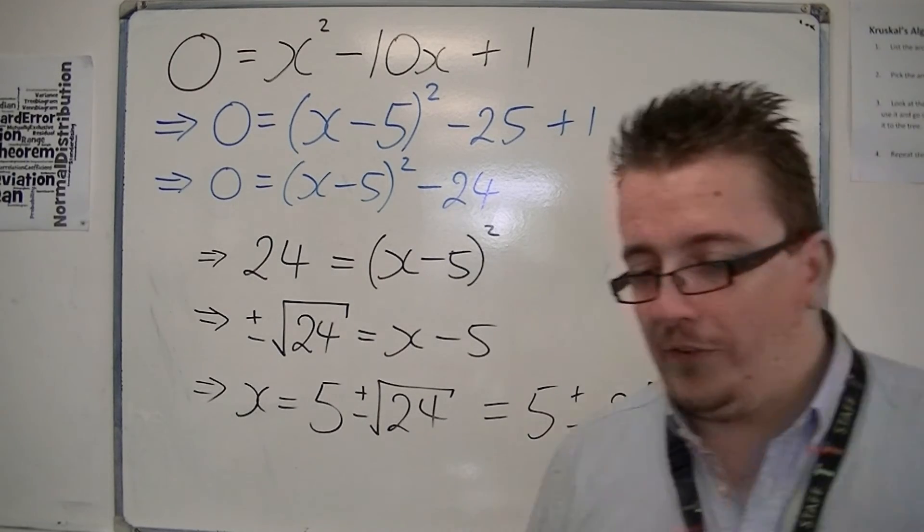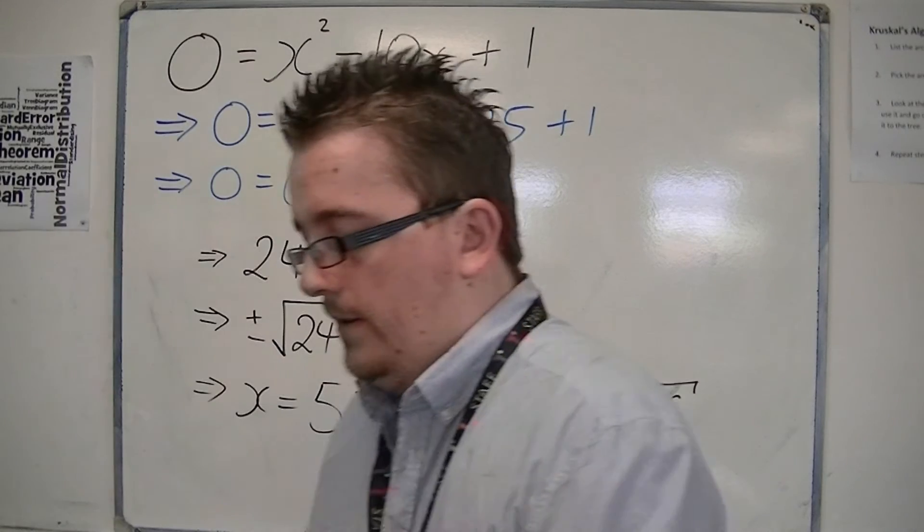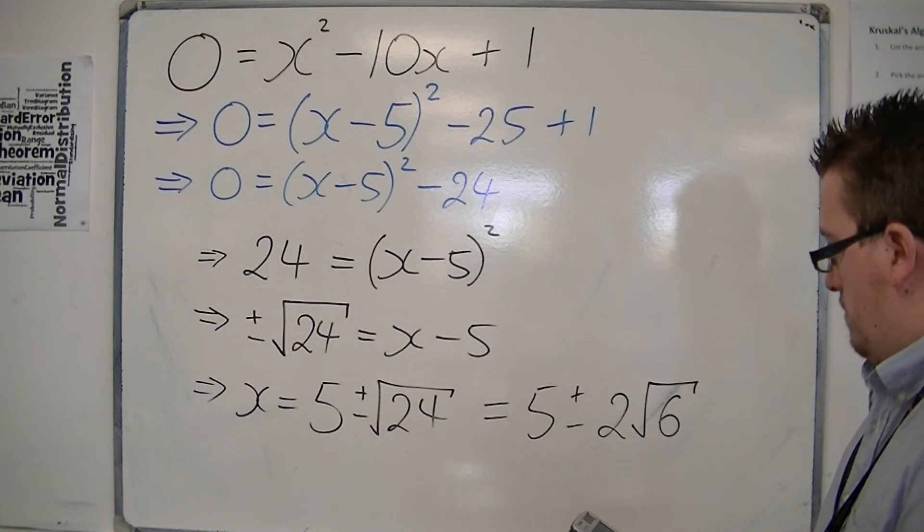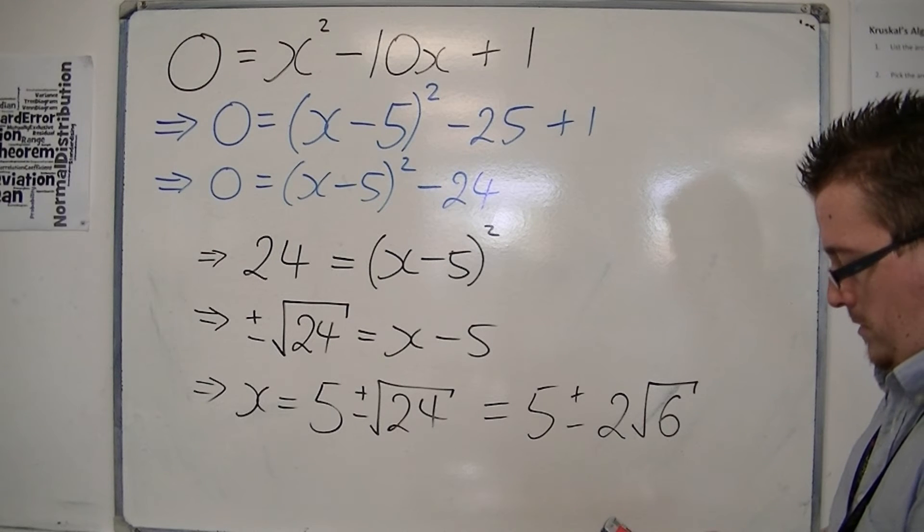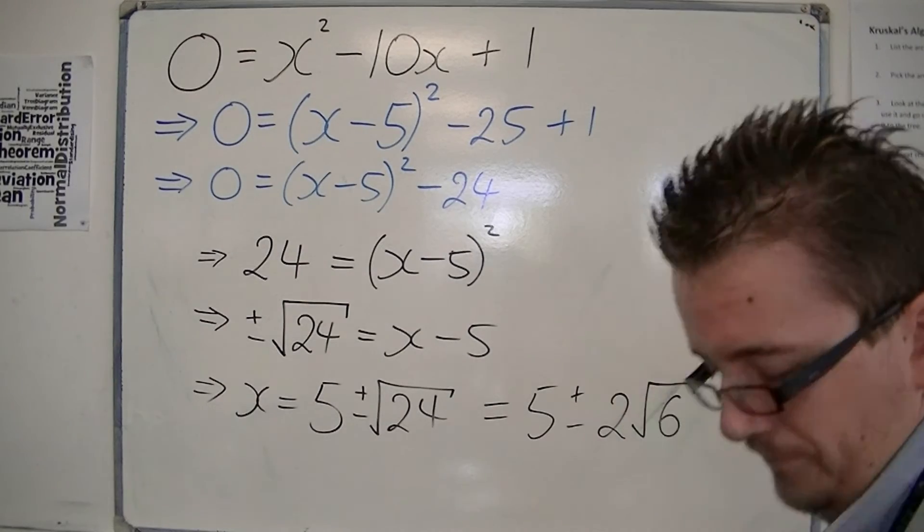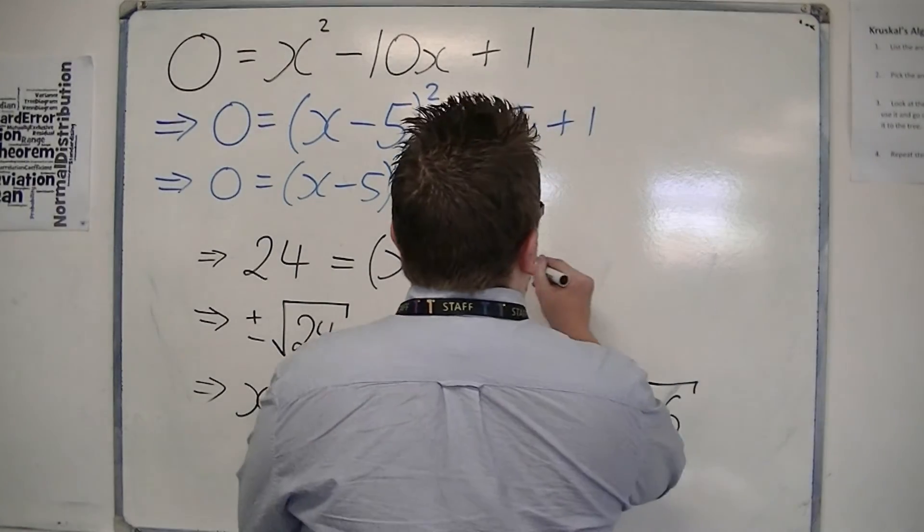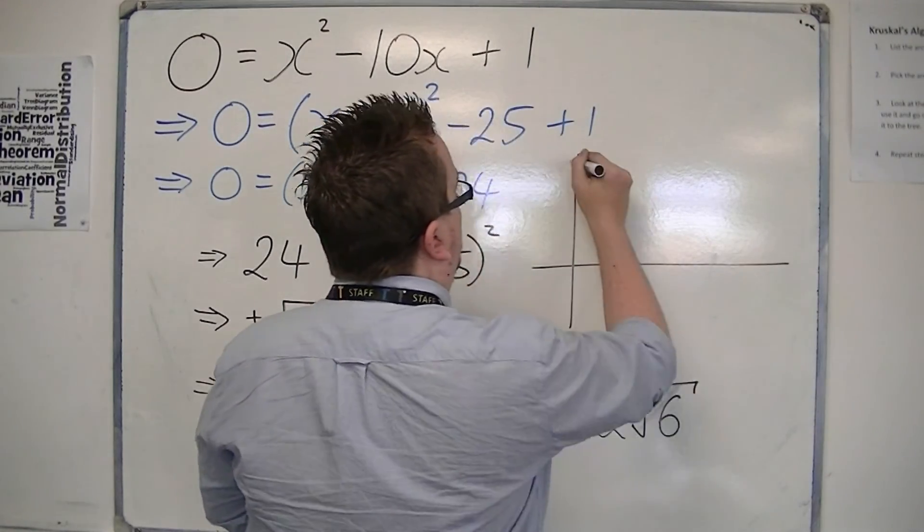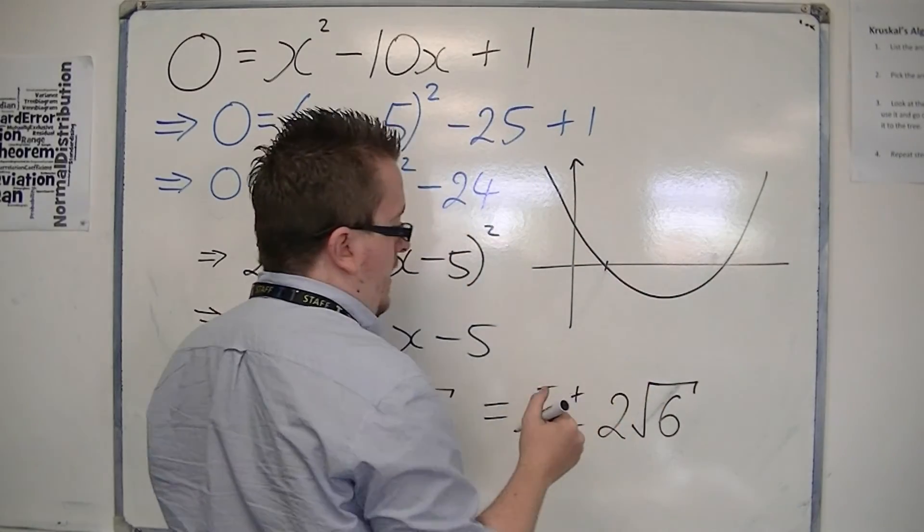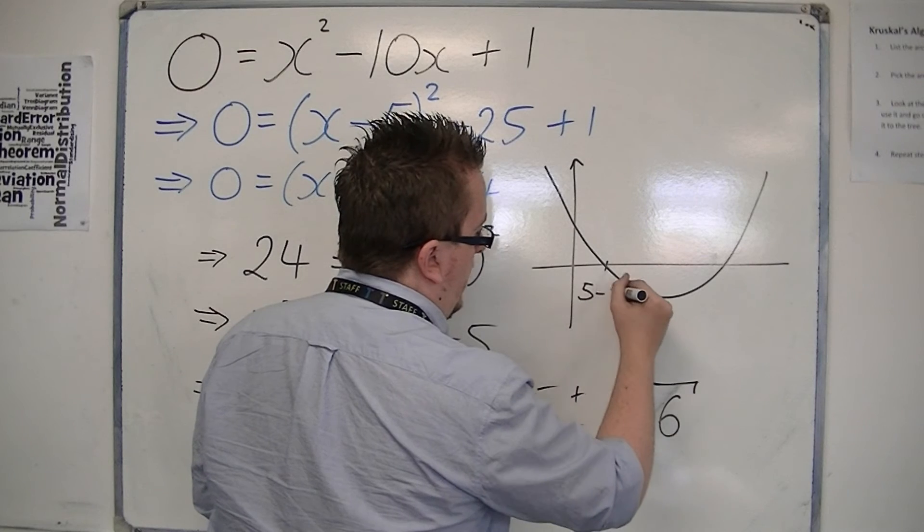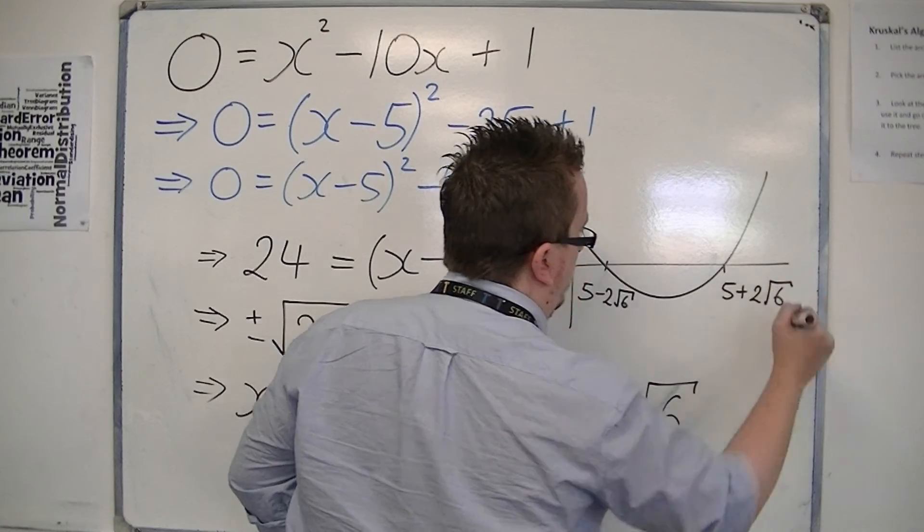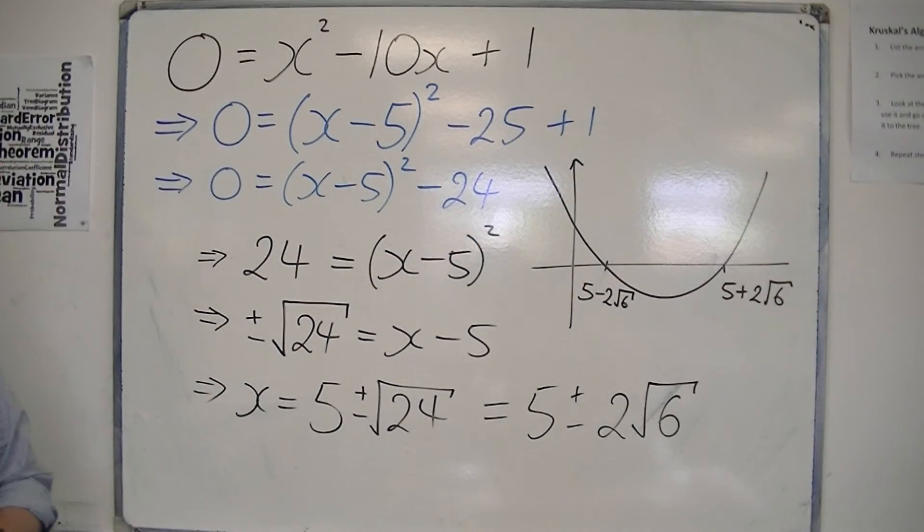So, if you were going to sketch that, I'm just going to check whether that goes beyond into negative numbers, the square root of 6. No, it doesn't. So, in sketching this, what you would have is a parabola where we have 5 take away 2 root 6 and 5 plus 2 root 6. And that is how the curve would look.